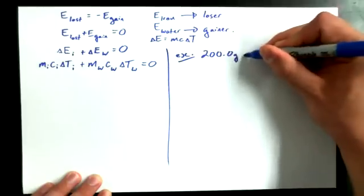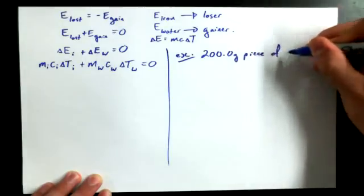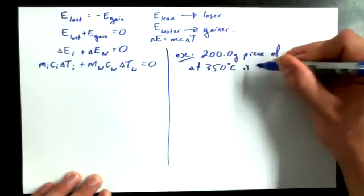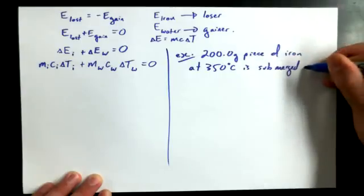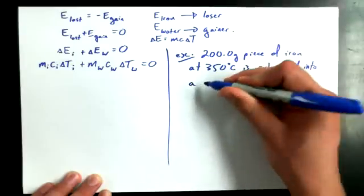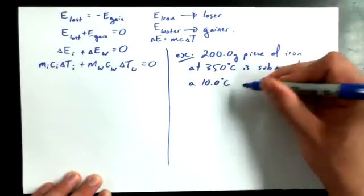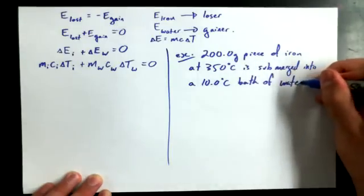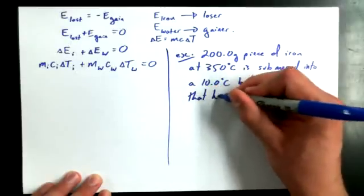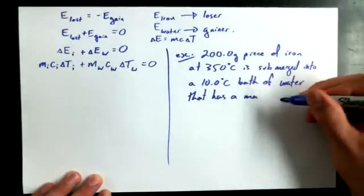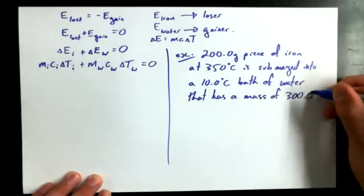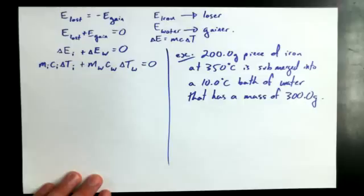So here's the example: a 200 gram piece of iron at 350 degrees Celsius is submerged into a 10 degree Celsius bath, or just a container of water, that has a mass of 300 grams.